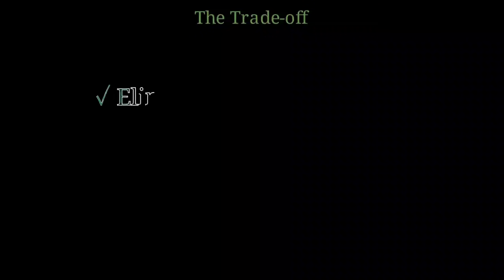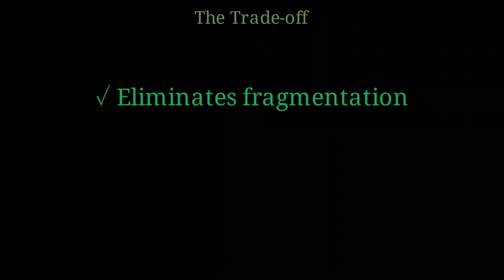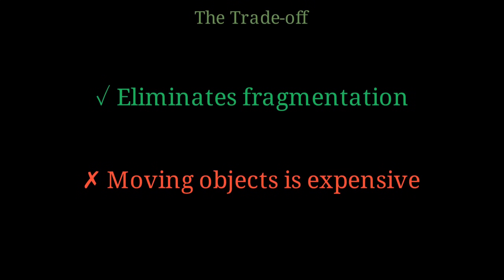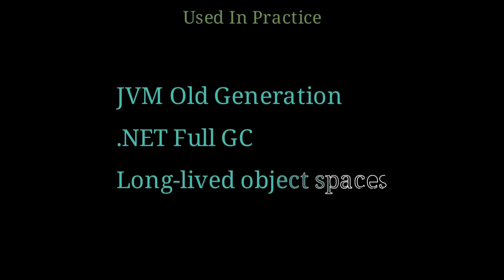But there's a trade-off. Mark and Compact eliminates fragmentation, which is excellent. However, moving objects and updating all their references is computationally expensive. The compaction phase takes more time than the simple sweep phase in Mark and Sweep. So we gain memory efficiency, but lose some speed. Despite this cost, Mark and Compact is widely used in practice. The Java Virtual Machine uses it for the old generation of objects, and the .NET runtime uses it during full garbage collections. It's the algorithm of choice for managing long-lived object spaces. When objects survive many collection cycles, compaction becomes worth the cost.